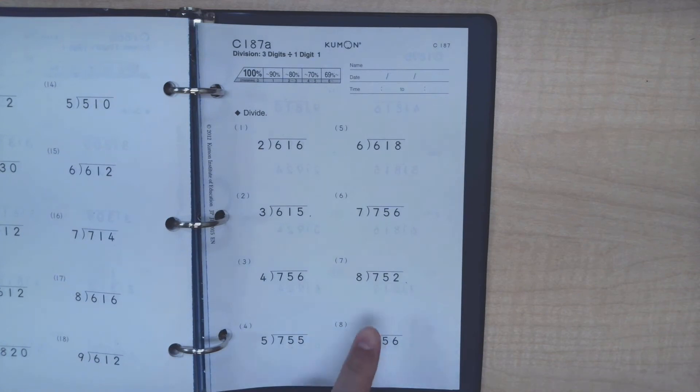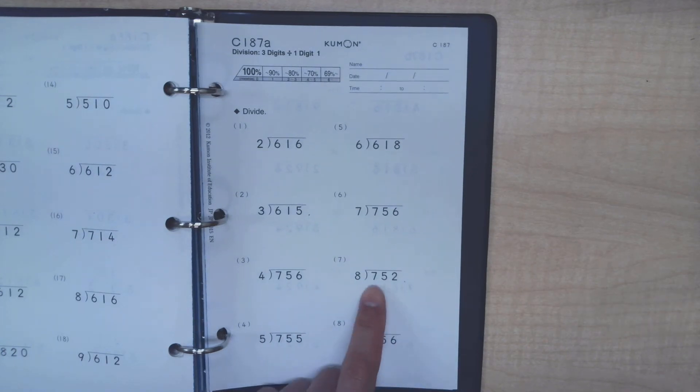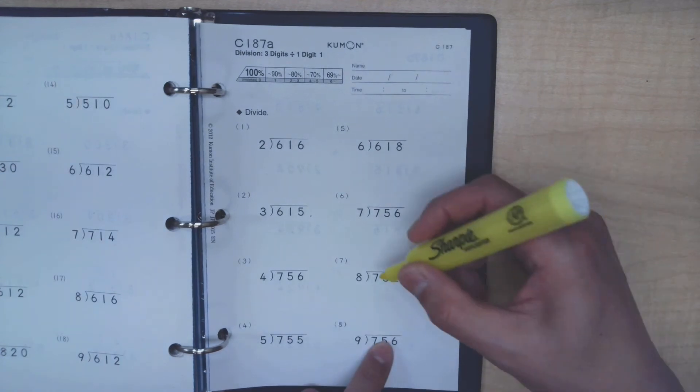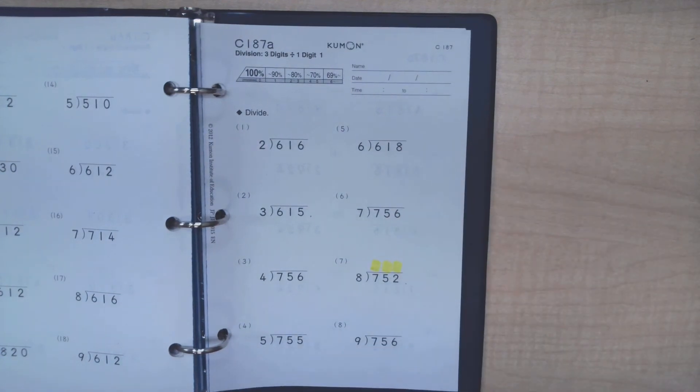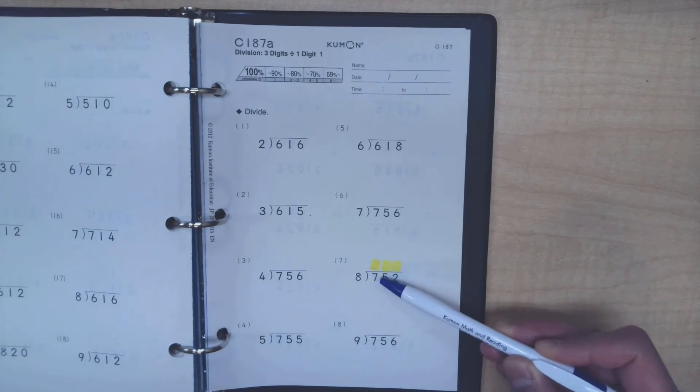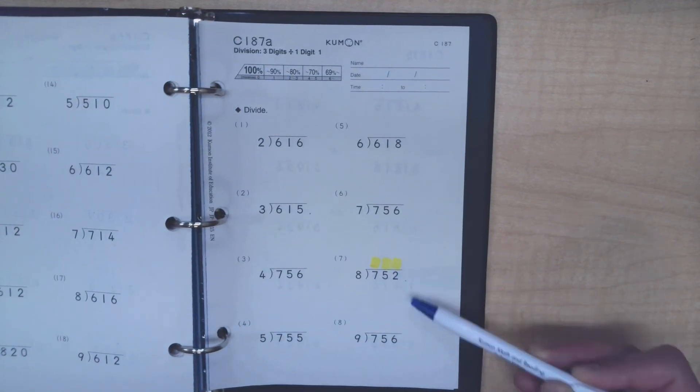Let's take a look at number 7 here. We have three digit divided by one digit, so we want to imagine that there are three spots where we could potentially put our answers down, one above each one of these numbers inside the division sign.